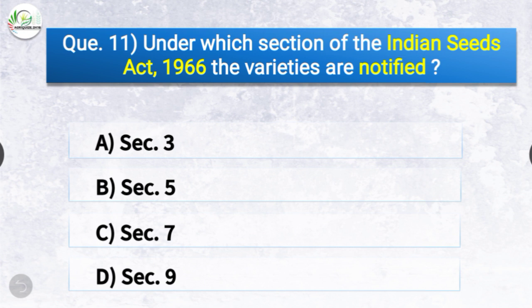Question number eleven: Under which section of the Indian Seeds Act 1966 are varieties notified? The options are section 3, section 5, section 7, or section 9. The correct answer is option B — section 5. Under section 5 of the Indian Seeds Act 1966, the varieties are notified.